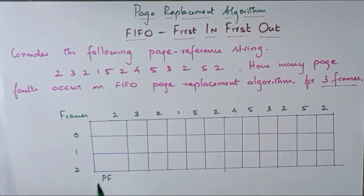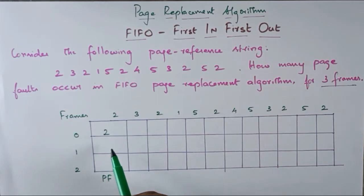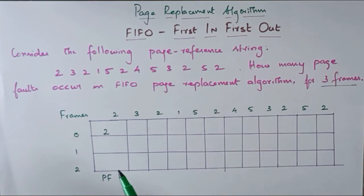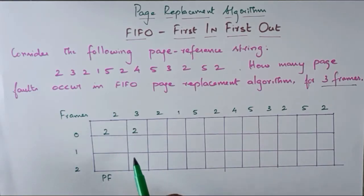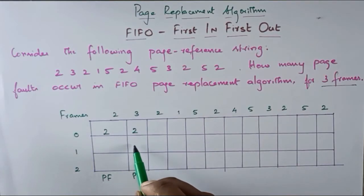Page fault. If we are going to change, page 2 is available, then page fault. 2 is available. We are going to change — this is a positive thing. We are going to replace this. If we are going to change, 3 is filled. 2 is available. Next, here is 2. 2 is available. Next, 3 is available — 3 is not there, so this is the page fault. 3 is not there, 3 is now available.